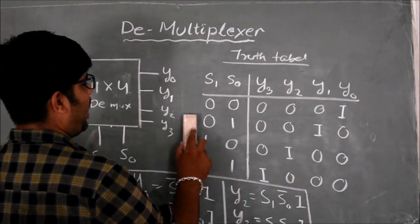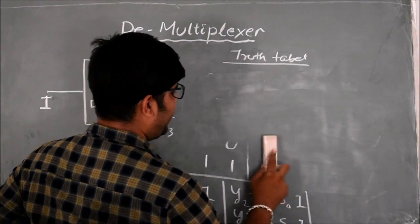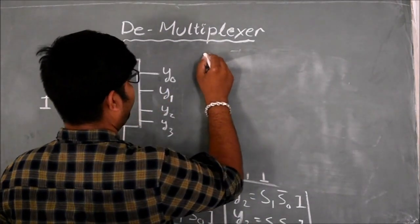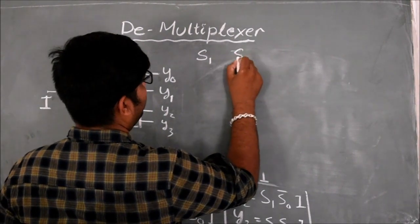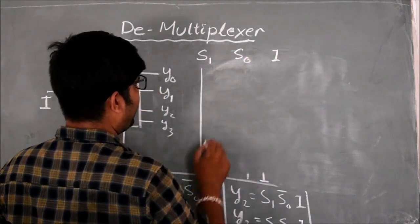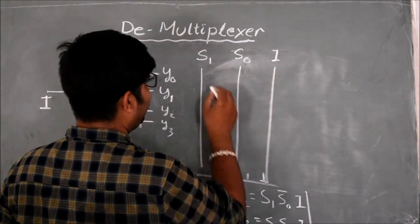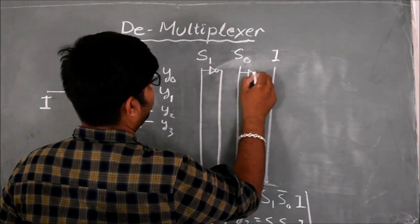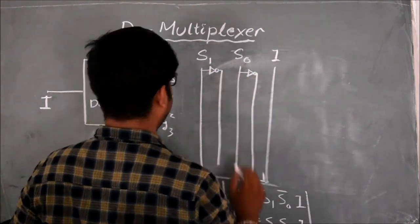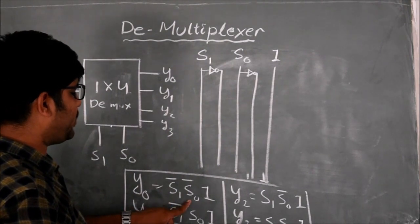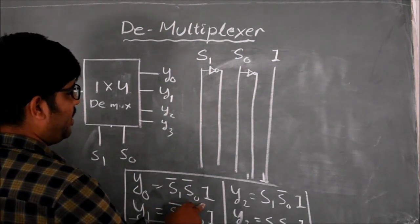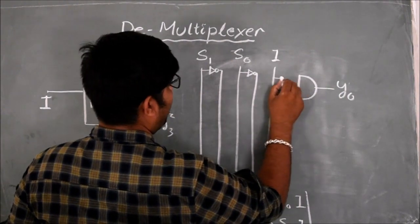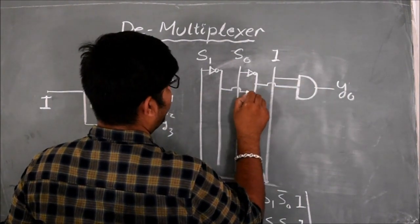Using this equation, I can design the internal circuit diagram of the 1x4 D-multiplexer. I should have S1, S0, and I. This is my S1 line, this is my S0 line, and this is my I line. This is the inverted S1 (S1-complement), this is the inverted S0 (S0-complement). Y0 is equal to S1-complement, S0-complement, I — so I take a three-input AND gate with output Y0 and inputs I, S0-complement, and S1-complement.